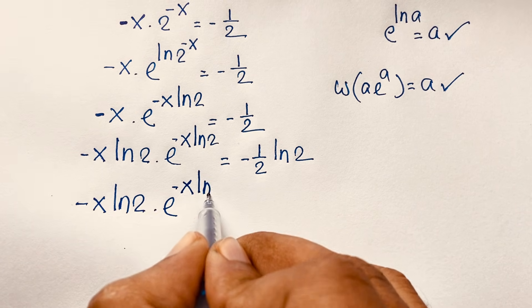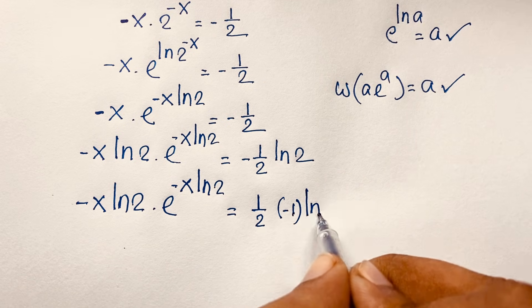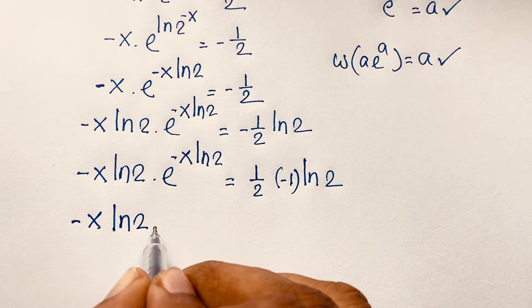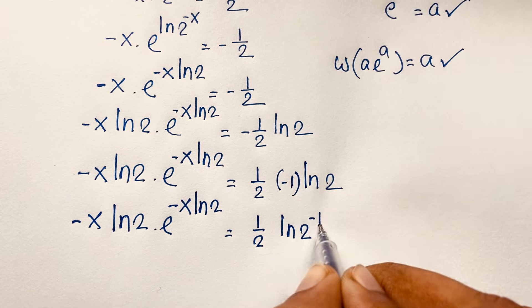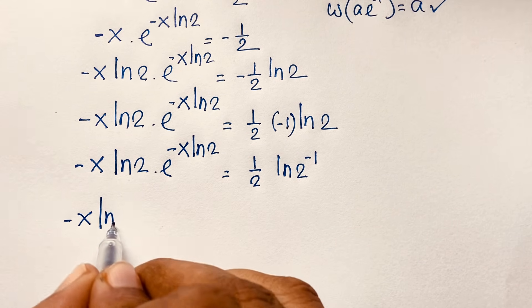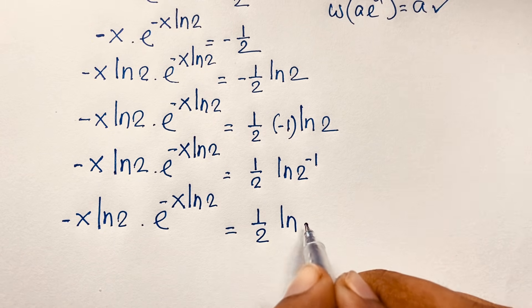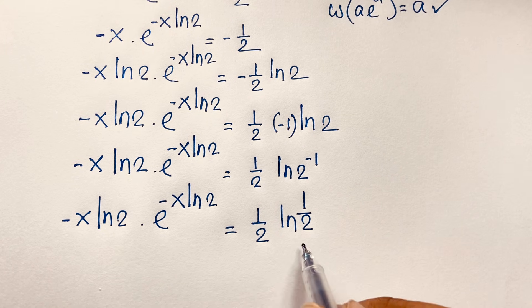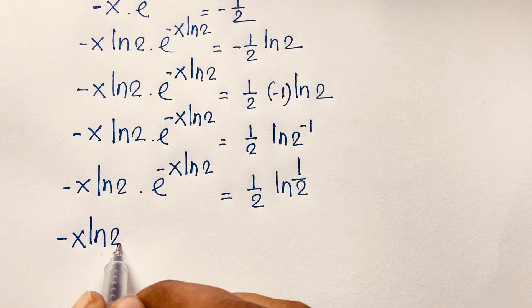Now this expression is: minus x·ln2 times e to the power (−x·ln2) equals negative one half times ln 2. We can write negative one half times ln 2 as ln(2^(−1)) times one half, which simplifies. The right-hand side becomes (1/2)·ln(1/2), giving the form needed to apply the Lambert W function.